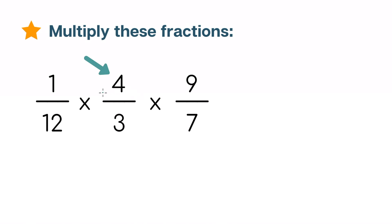Well, you'll notice that the numerator 4 is divisible by 4, and the denominator 12 is also divisible by 4. So we can simplify. 4 divided by 4 is 1, and 12 divided by 4 is 3.